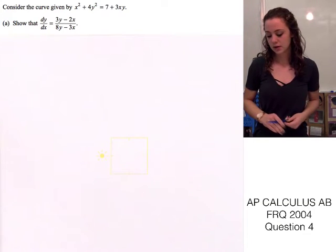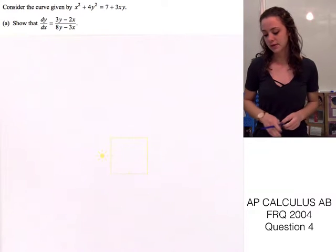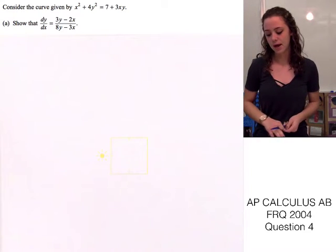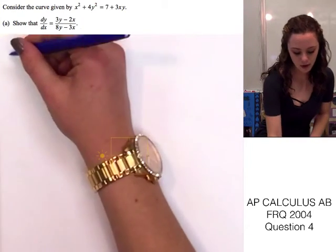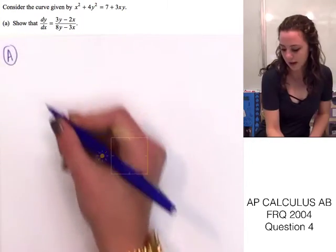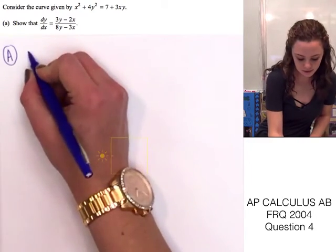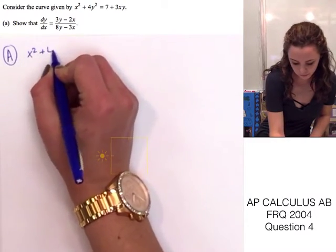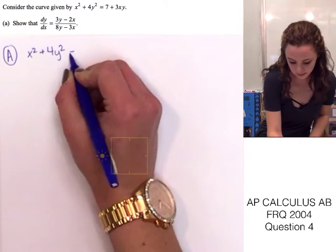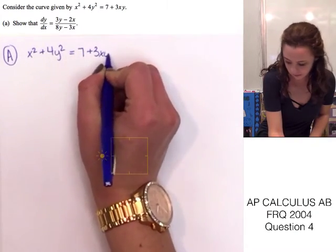Part A says for us to show that dy over dx is equal to 3y minus 2x all over 8y minus 3x. For part A, I'm going to start by writing the original curve, which is x squared plus 4y squared is equal to 7 plus 3xy.